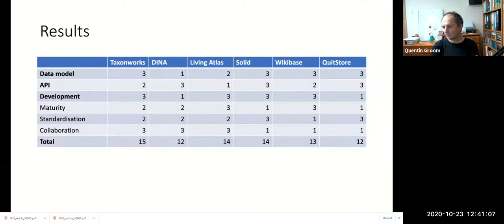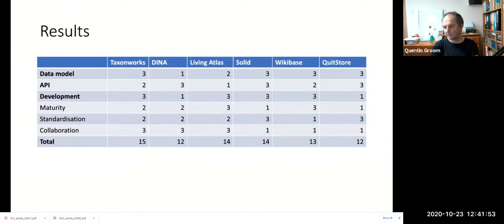Looking at the high-priority criteria, there are several areas where DINA Collections Manager and Living Atlas don't fit the Scratch Pads use case exactly. DINA Collections Manager lacked the desired data model fit and hasn't seen any development activity since June 2019. Living Atlas doesn't support write operations to some of its services — particularly the indexing services for Darwin Core Archive files — which makes sense given its focus on data aggregation, but doesn't meet Scratch Pads' requirement to write data. QuitStore also hasn't received recent development work, scoring a one in that criteria.